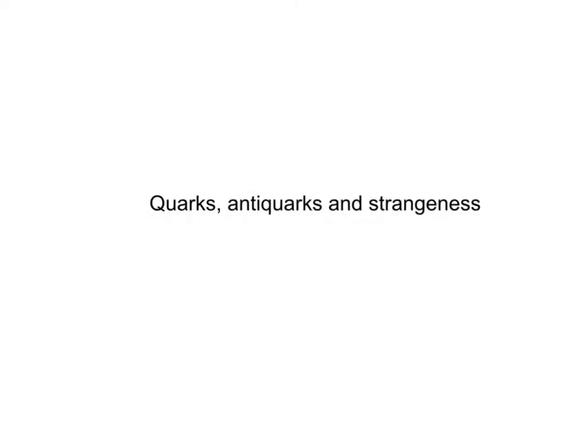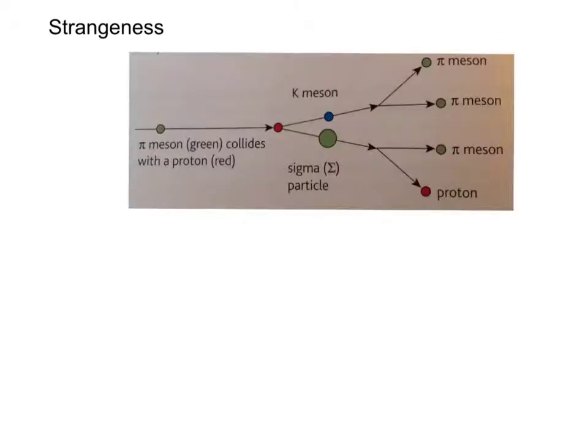Quarks, antiquarks and strangeness. When K-mesons were discovered, they were first called V-particles because the cloud chamber photographs often showed V-shaped tracks.